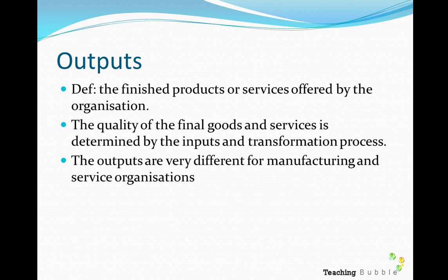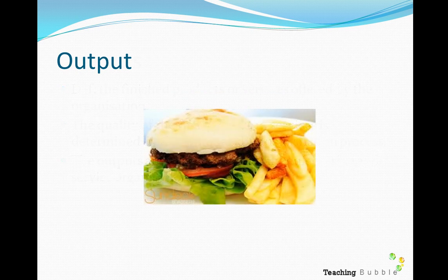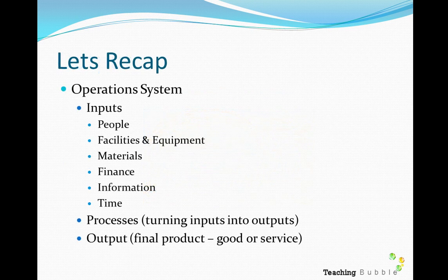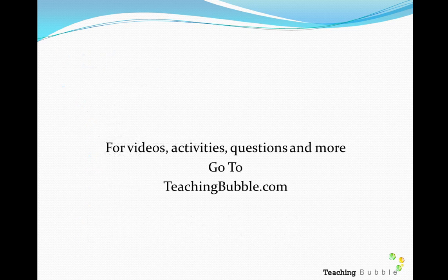The output for our hamburger would be the final product. To recap: the operation system involves inputs — people, facilities and equipment, materials, finance, information, and time — which are transformed via processes into the final product, either a good or a service. In the next video, we'll look at the role of operations managers and start looking at productivity and how to increase it. For videos, activities, questions, and more, always head to teachingbubble.com.